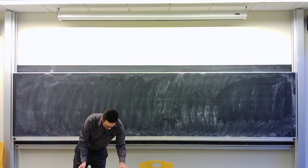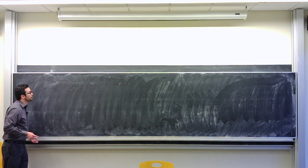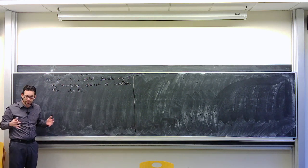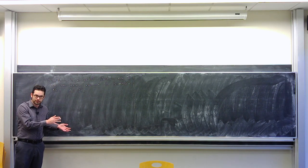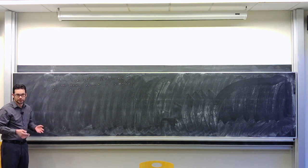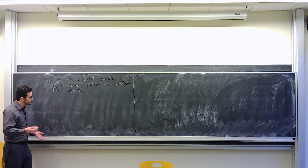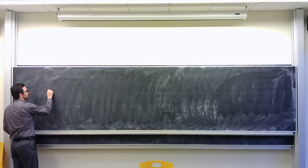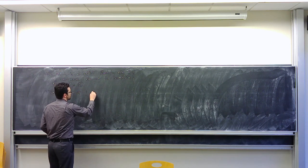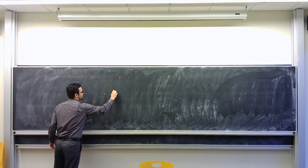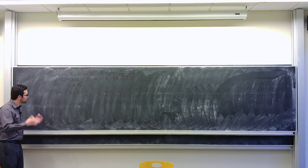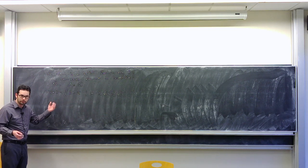Today we'll continue discussing the spectrum of an element in a Banach algebra. We'll see a big connection between topological aspects and algebraic aspects of these algebras. One algebraic aspect is simply whether an element is invertible or not. The spectrum of an element is by definition the set of complex numbers λ such that x minus λ is not invertible.